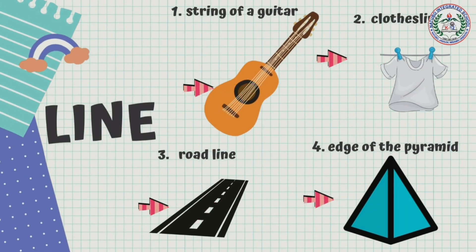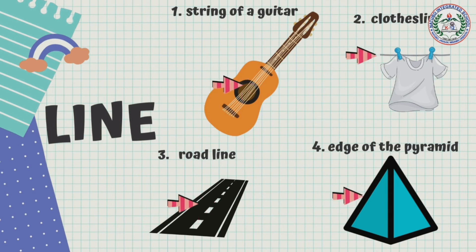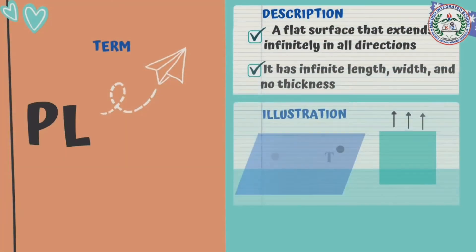The following are concrete examples of a line. We have one, string of a guitar; two, clothes line; three, road line; and four, edge of the pyramid. Lastly, we have the plane.